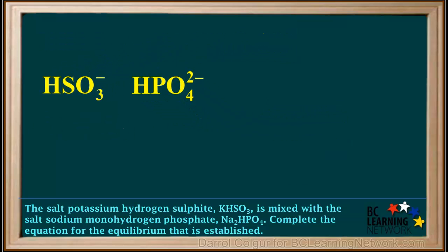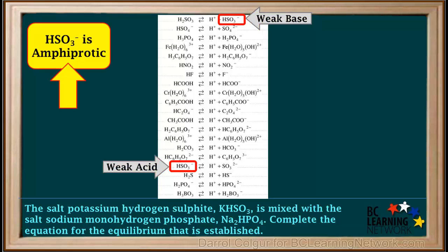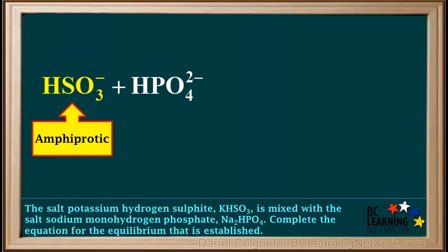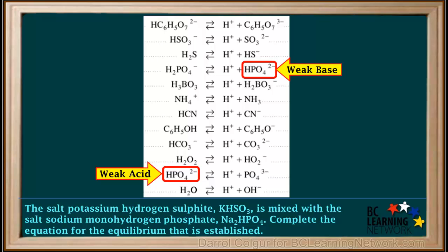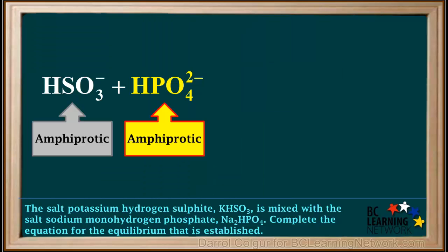We'll move these two ions so they become reactants. In a new equilibrium equation, we look up HSO₃⁻ on the acid table and see that it appears on both sides of the table, so HSO₃⁻ is amphiprotic — it can act as an acid or as a base. We also find HPO₄²⁻ on the table and see that it is also on both sides, so HPO₄²⁻ is amphiprotic as well.